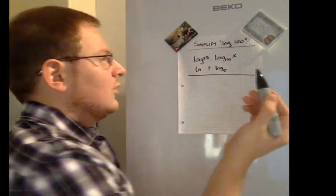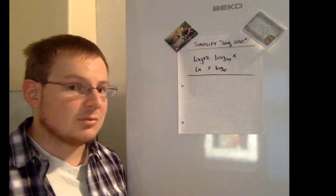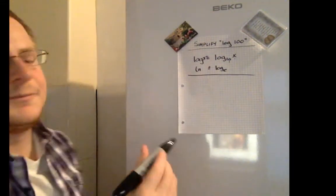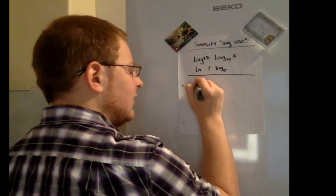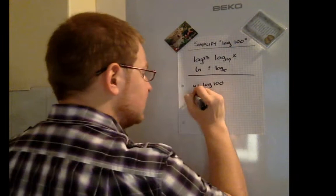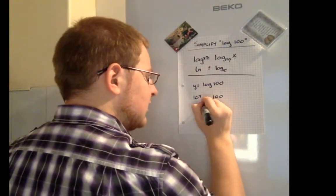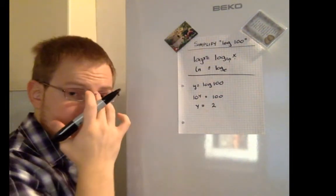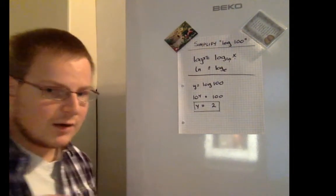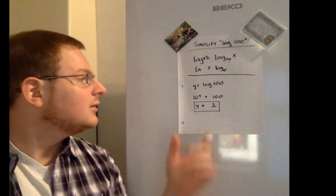Now, this aside, if we know that it's log to the base 10, we basically wind up with the question: how many times do we multiply 10 by itself to get 100? The multiplication table says 10. So, we'll start with y is equal to log of 100. The way we solve this is we know that 10 to the y is equal to 100. So, 10 times 10, or 10 squared, is equal to 100. Therefore, y equals 2.